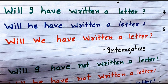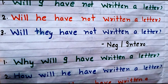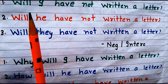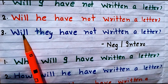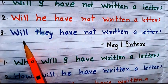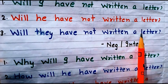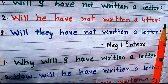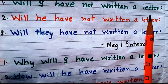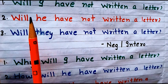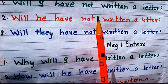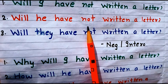The next type is negative interrogative — questions formed with a negative sense. Examples: 'Will I not have written a letter?' 'Will he not have written a letter?' 'Will they not have written a letter?' The structure uses helping verbs first, then subject, then 'have', then 'not' — because it is a negative sentence — then the third form of the verb, then object, and finally the question mark.